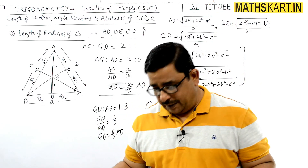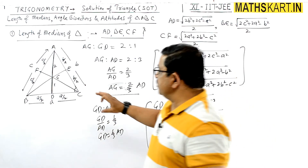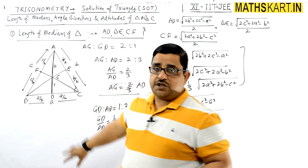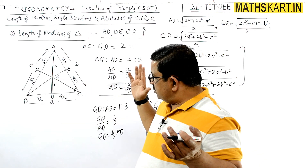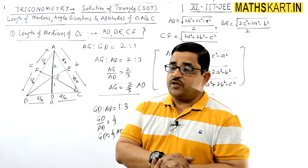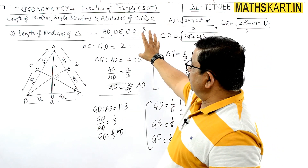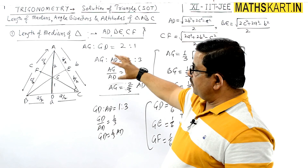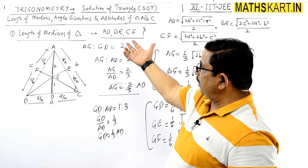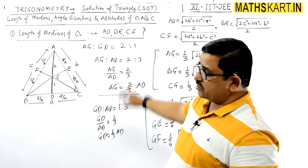So you can find out any length. If you know the three medians, and the centroid divides them, you can find AG or GD. Overall you can find out all 9 lengths. These formulas are related to the medians. Next we are going to take the angle bisectors and then the altitudes. First we'll solve some questions based on length of medians, then angle bisectors and their questions, and similarly for altitudes.